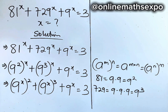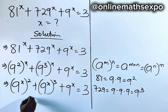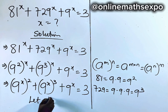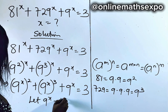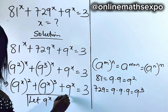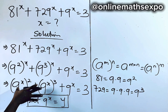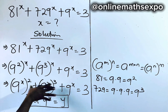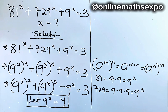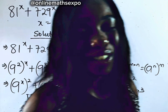Did you observe that 9 to the power of x is repeated? So let's quickly use another variable for 9 to the power of x — you can use y. We are going to substitute it here to help us solve.